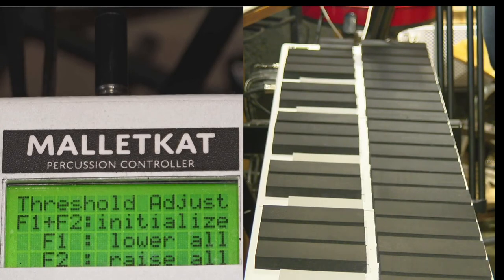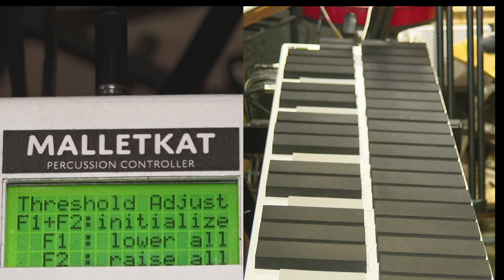Again, the threshold is the softest point when that strike is recognized. So if you feel that the instrument is not sensitive enough, this is how you increase the sensitivity by hitting this to lower it, or hitting this to raise it if it's too sensitive.